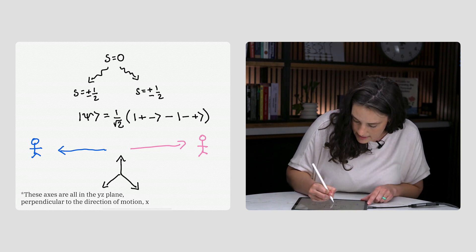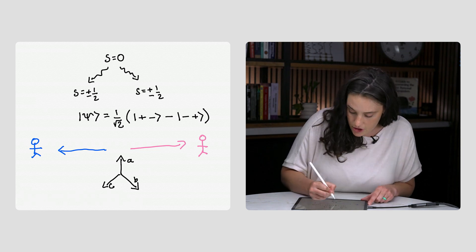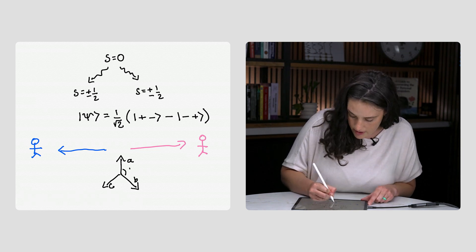We'll call these axes A, B, and C. And they're each separated by 120 degrees.